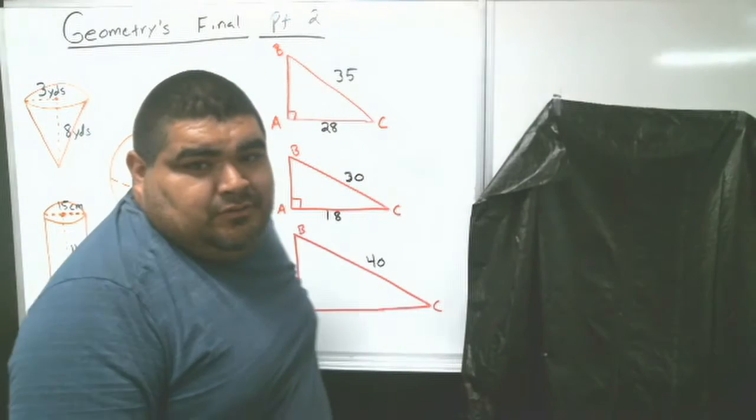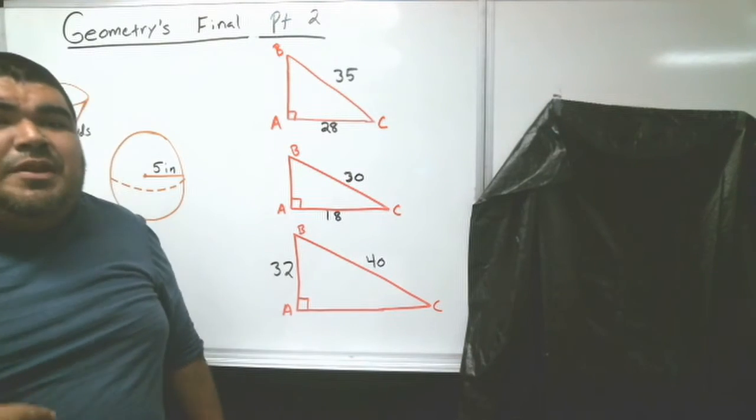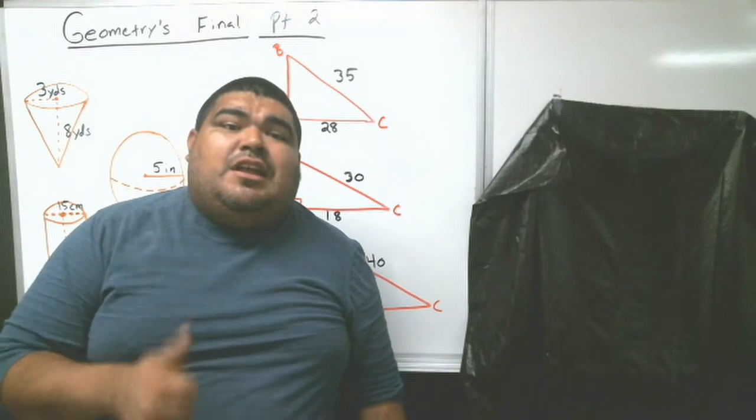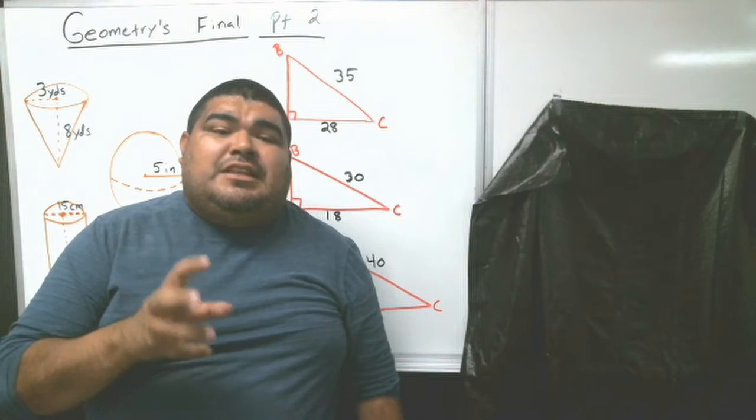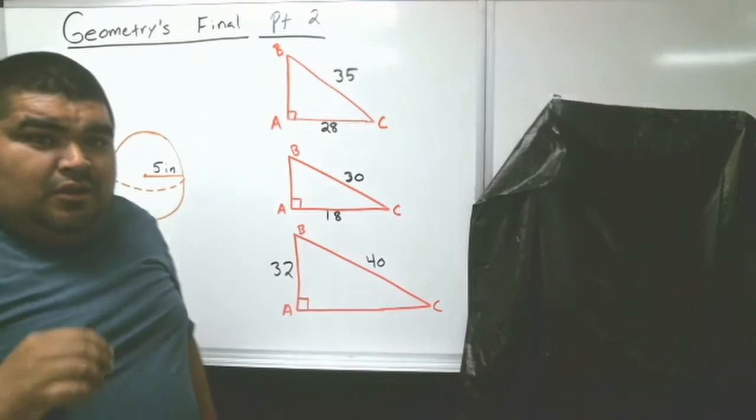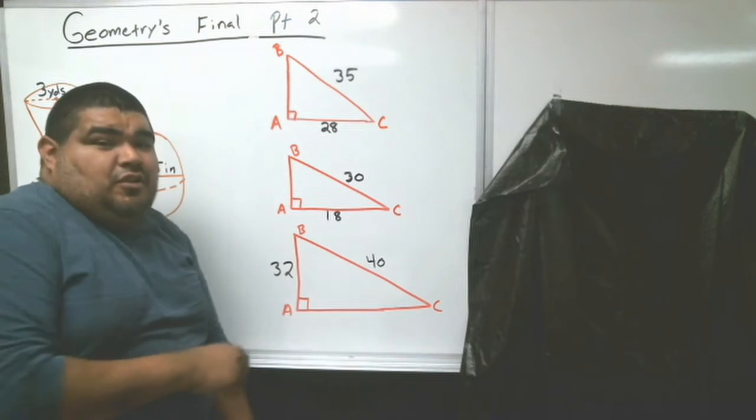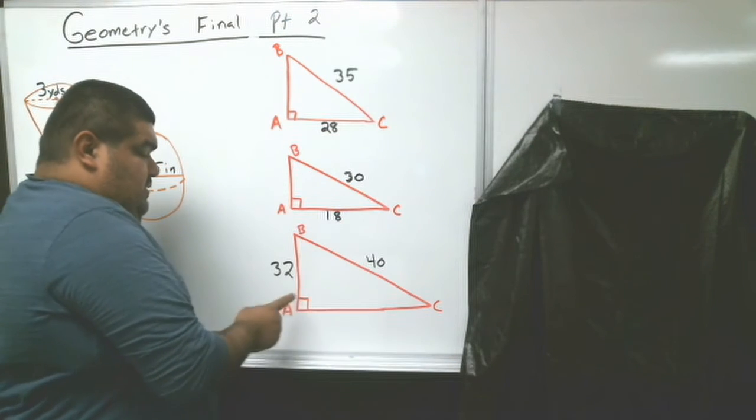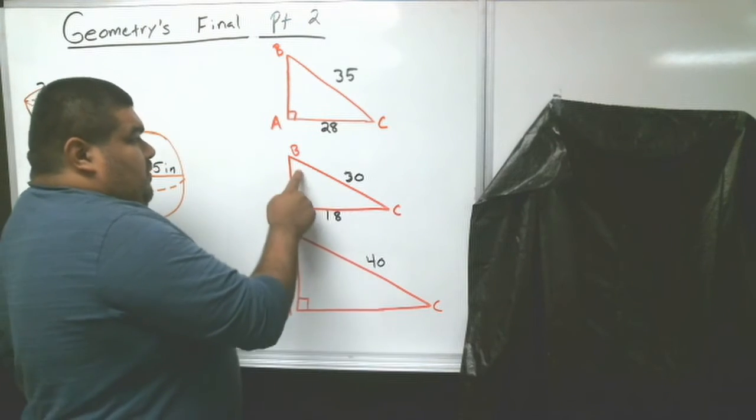We have triangles. Remember trigonometric ratios. You have hypotenuse, adjacent, and opposite, where you have sine, cosine, and tangent. Your objective for this part of the test is not only to solve for the side that you're missing, but also solve for the angles that you are missing.